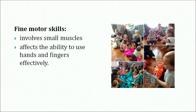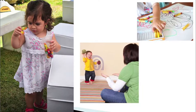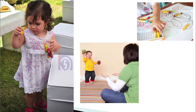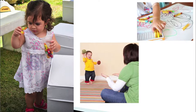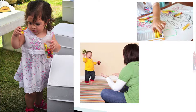Fine motor skills involve small muscles and affect the ability to use hands and fingers effectively. Fine motor skill development usually involves eye-hand coordination, which is the ability to match the movement of the hands with what the eyes see. Developing fine motor skills helps children in holding things like a cup or a crayon, turning the pages of a book, buttoning and zipping, drawing and writing, and so on. In simple words, fine motor skills help children grasp, hold, move, and handle different objects. Most activities of children — as well as adults — require a combination of gross and fine motor skills.